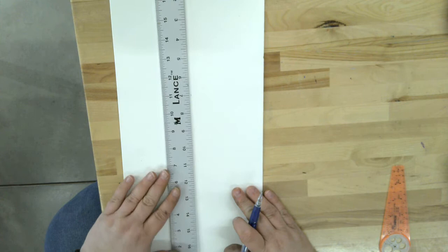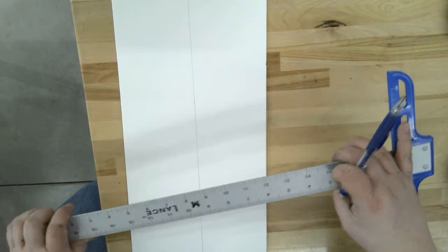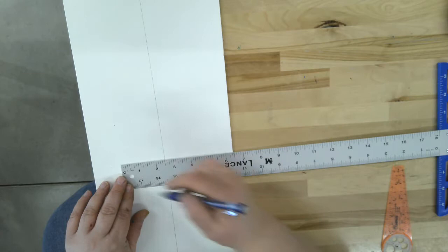And make this line nice and light, because we're eventually going to erase it. Okay, and then from that line, we're going to measure two and a half inches over.